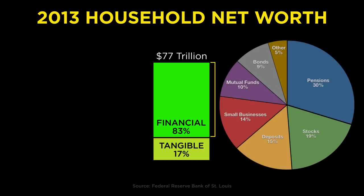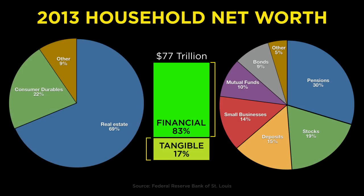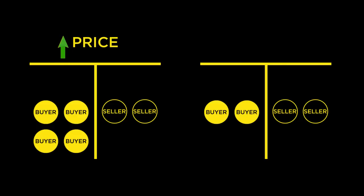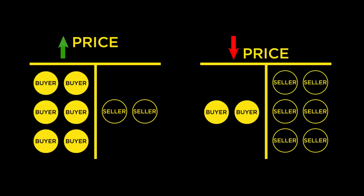The $63 trillion worth of financial assets consists of things like pension funds, assets of privately held businesses, deposits, stocks, and bonds. The other bucket of $14 trillion in tangible assets consists primarily of real estate, which is 69% of this bucket, and consumer durables — your car, your dryer, maybe your snowblower. For every single one of these assets except cash, in order to liberate the wealth you'd have to sell them first. One general rule of asset markets: things go up in price when there are more buyers than sellers, and things go down when there are more sellers than buyers. Hold on to that thought for when we get to the chapter on demographics.